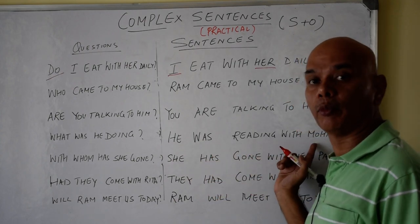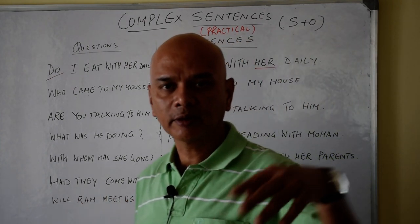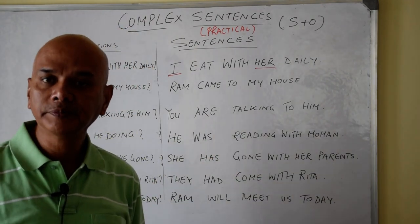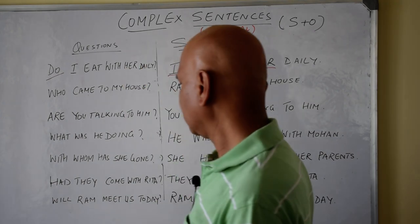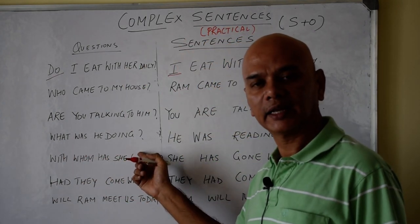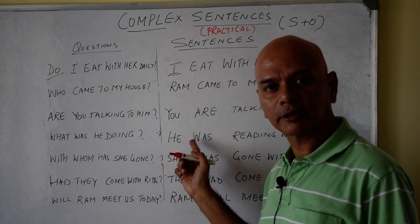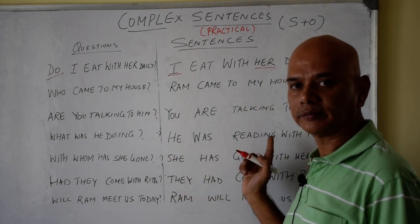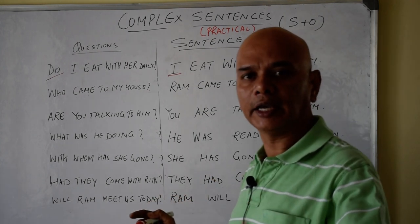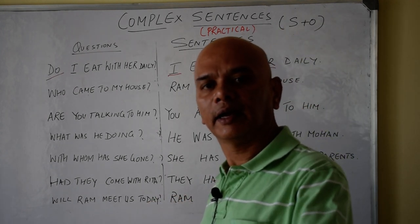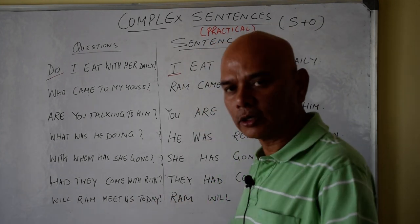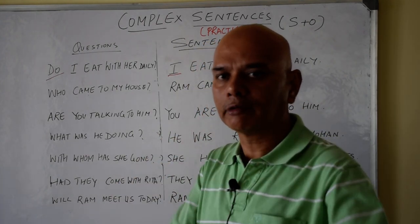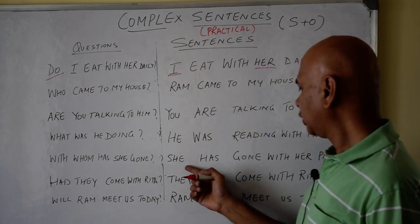He was reading with Mohan. 'He' is the subject, 'Mohan' is the object, and the verb is 'reading'. The question: what was he doing? He was reading with Mohan. Where was he reading? He was reading in his house. Subsequent question-answers will be discussed further as you develop the habit.